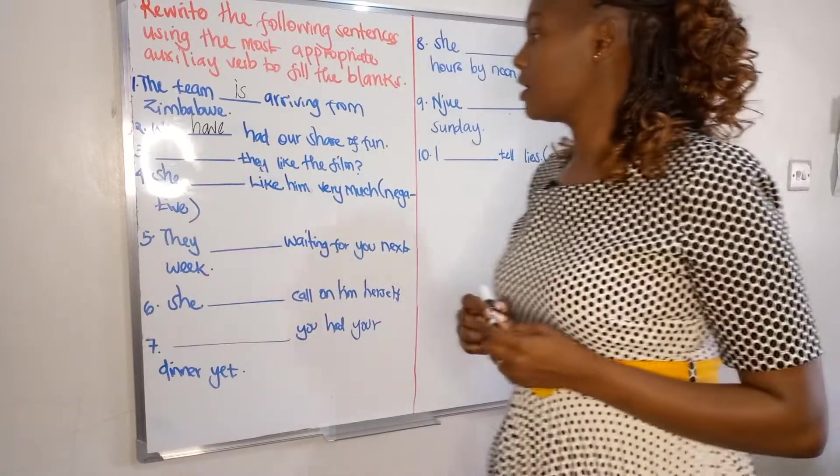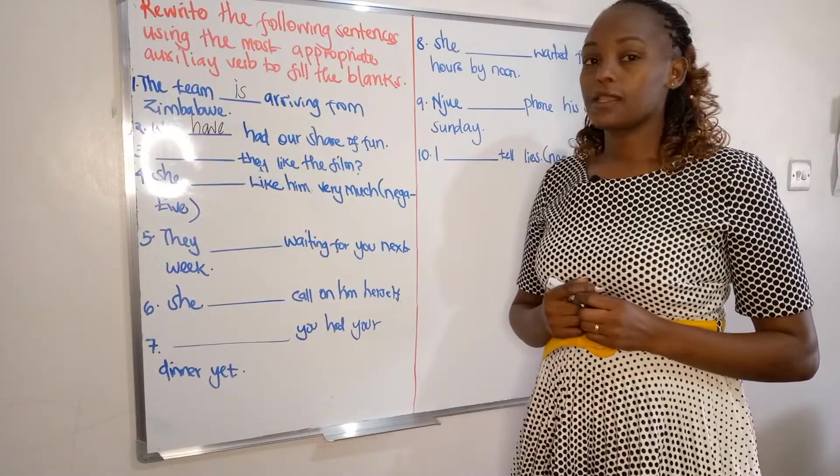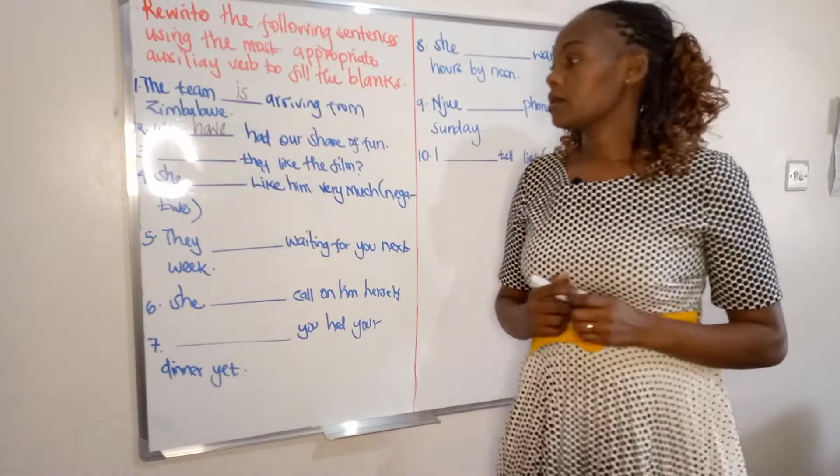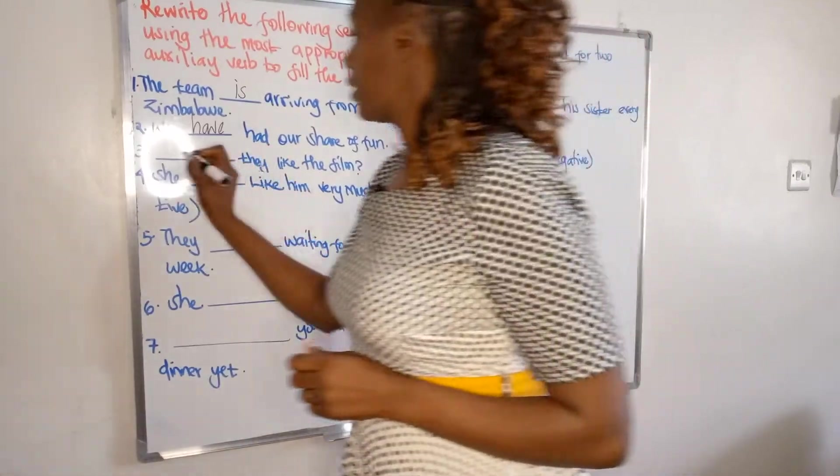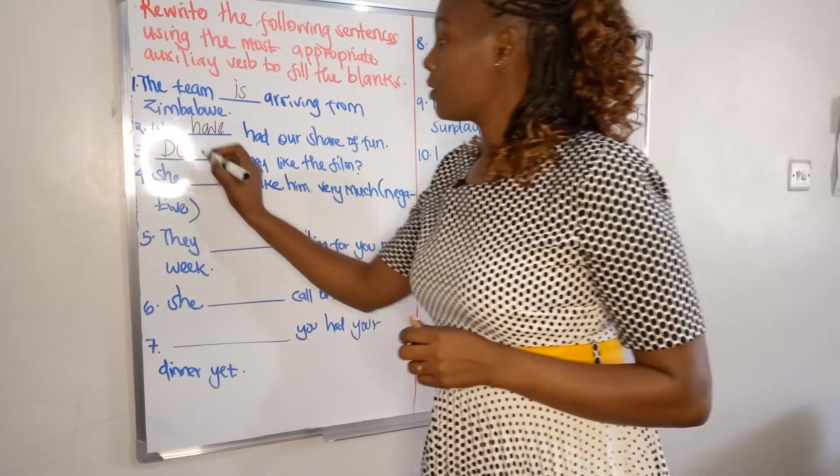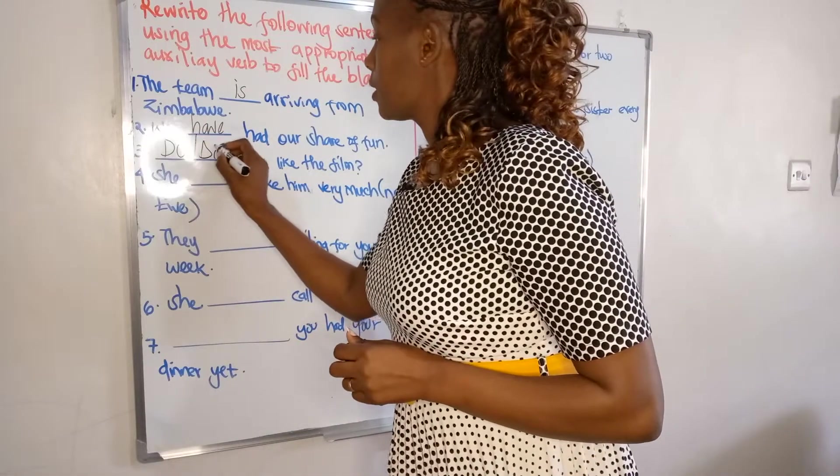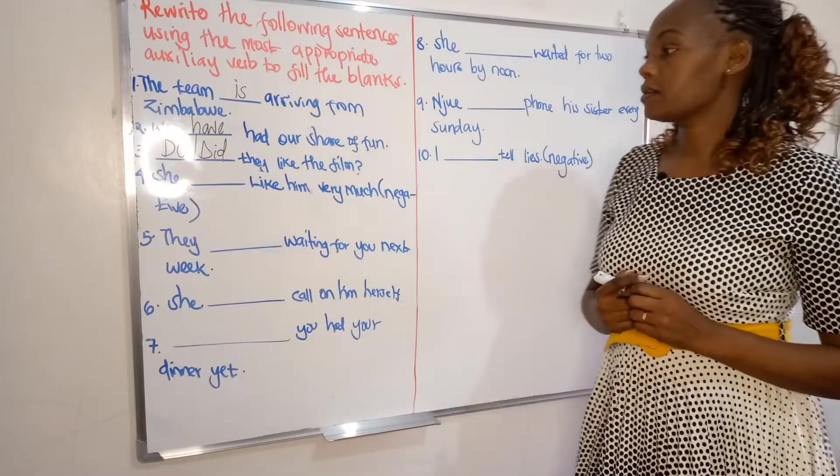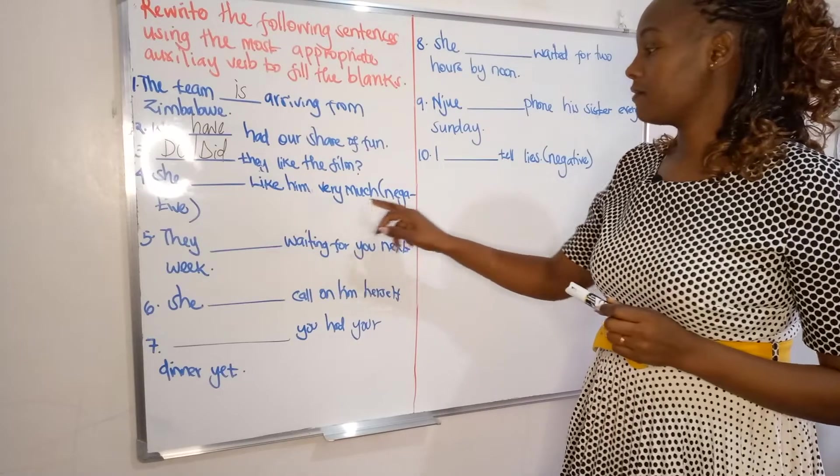Question three: dash they like the film? We can say do they like the film or did they like the film. Number four: she dash like him very much, in brackets negative, so the sentence should be negative.